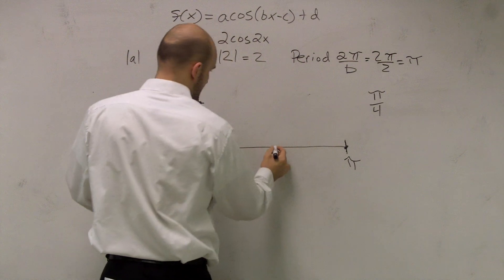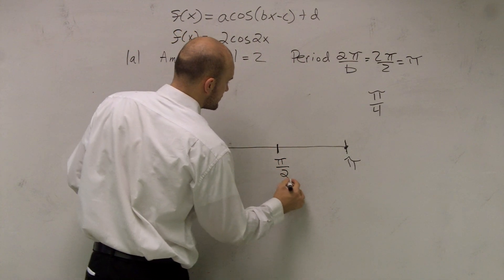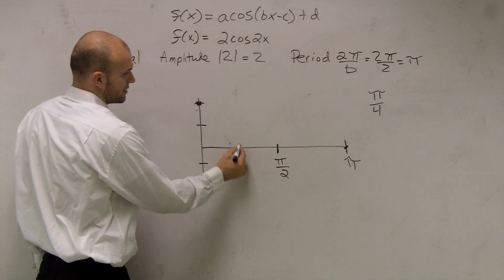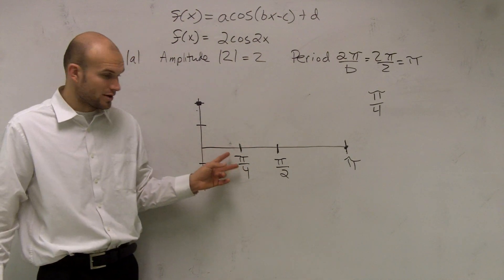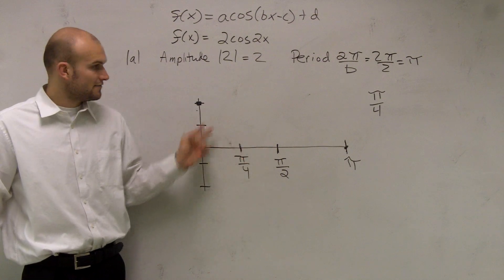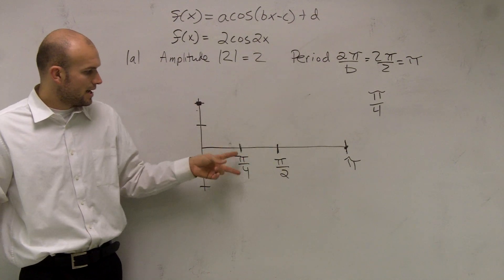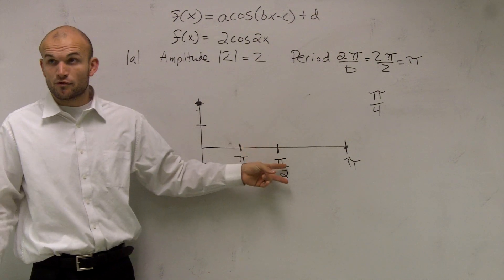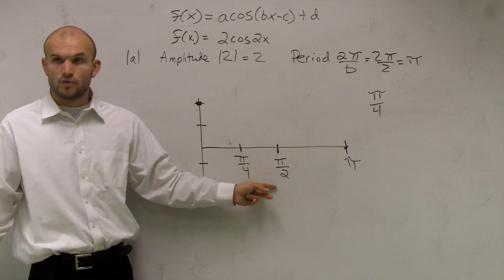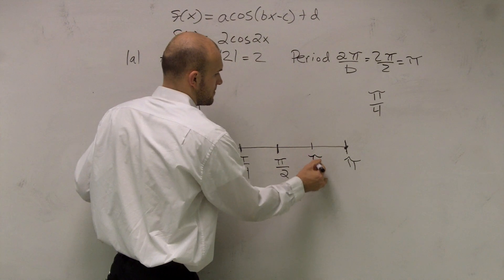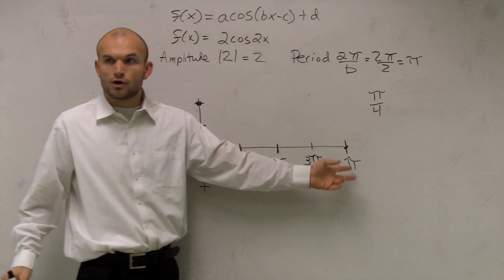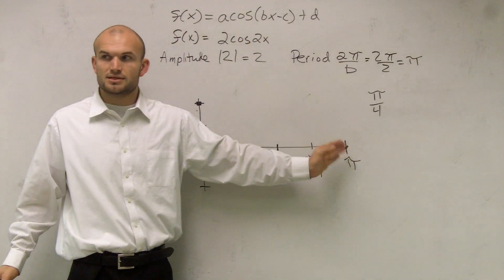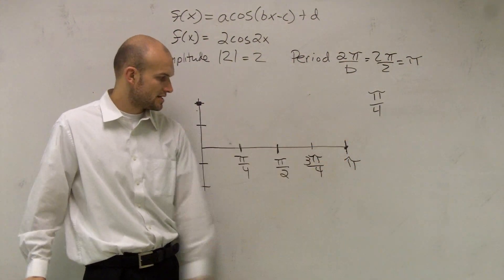Halfway would be pi over 2, and pi over 4 is our first increment. Adding pi over 4 repeatedly: pi over 4 plus pi over 4 is 2 pi over 4, which is one half pi. Add another pi over 4 to get 3 pi over 4, and then pi, or 4 pi over 4.